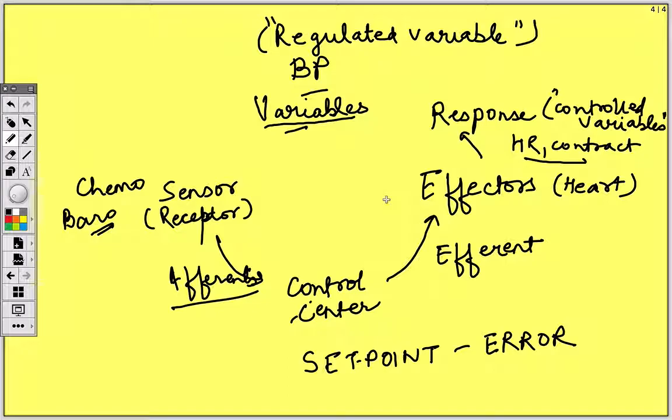This is a classic example of negative feedback control system. The control system has many components: one is the regulated variable, other is a sensor, then there are afferents, control center, efferent, effectors and their response, due to which there is change in the regulated variable.